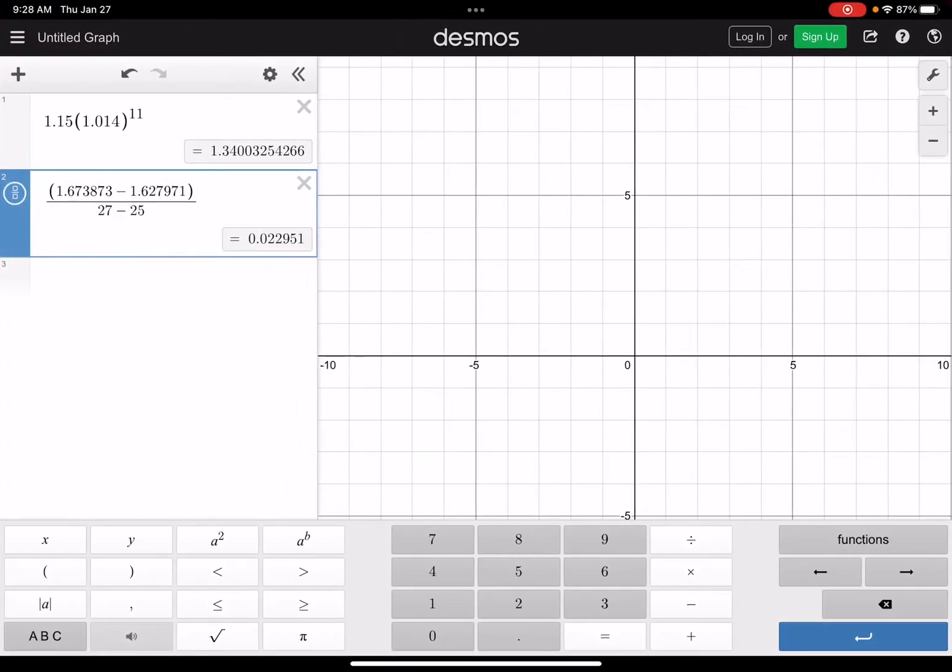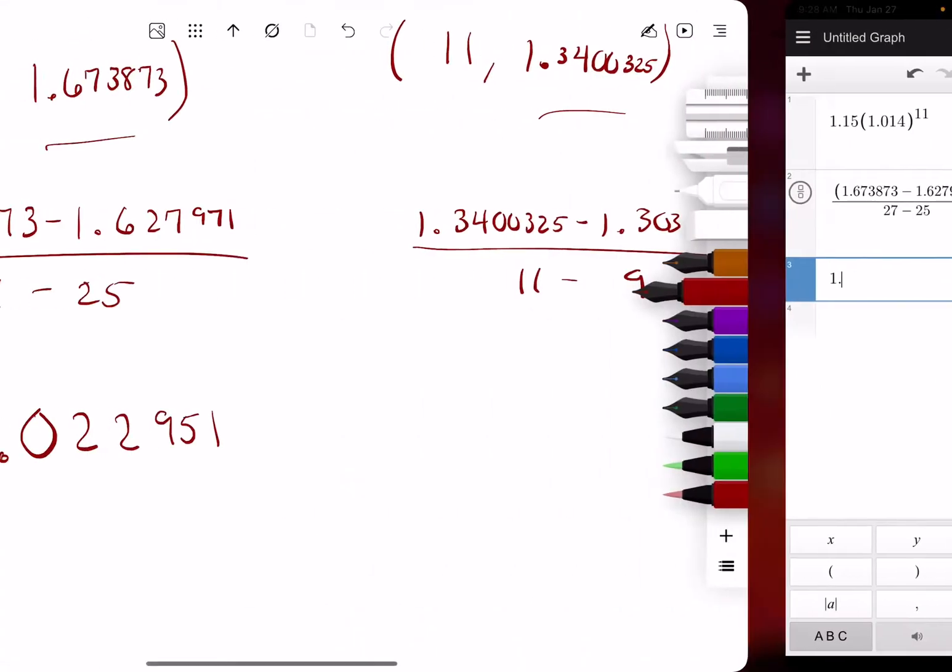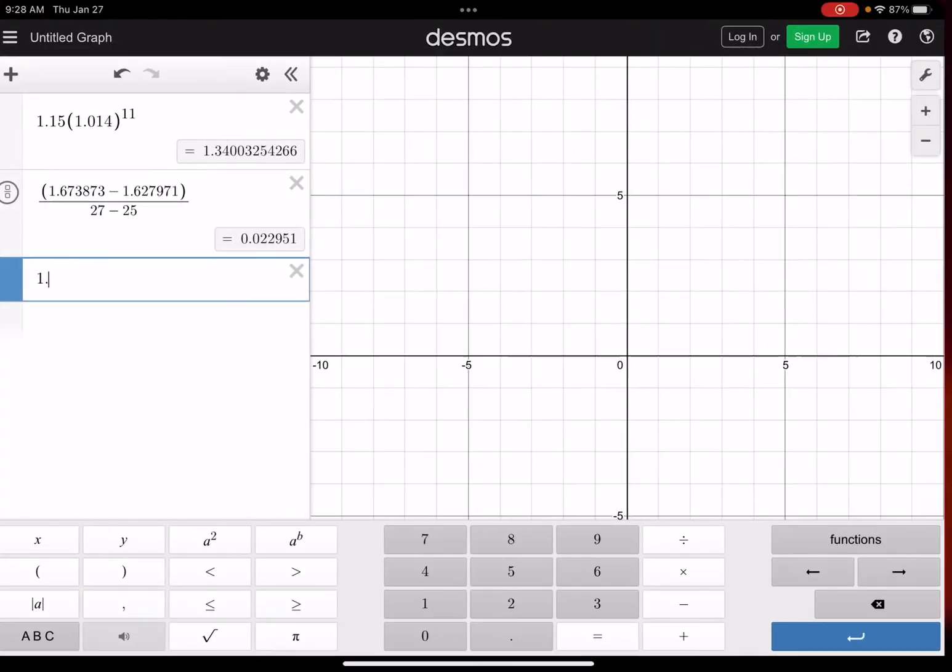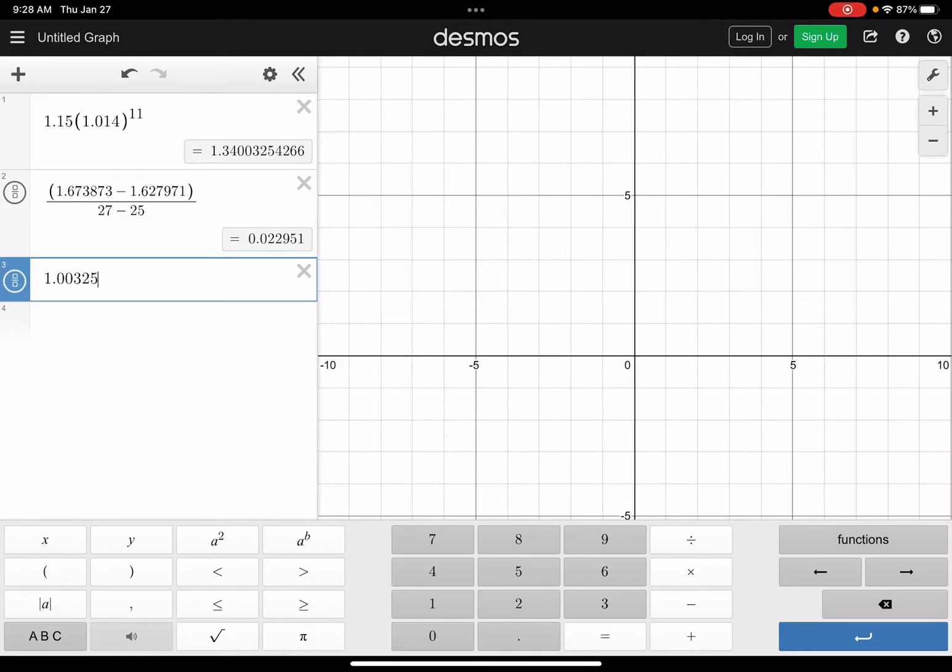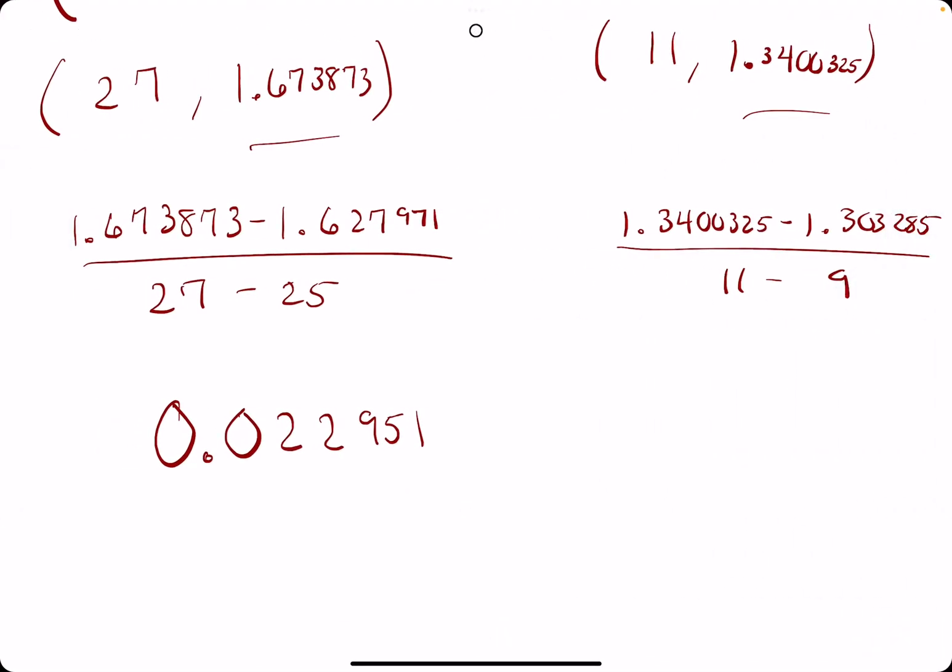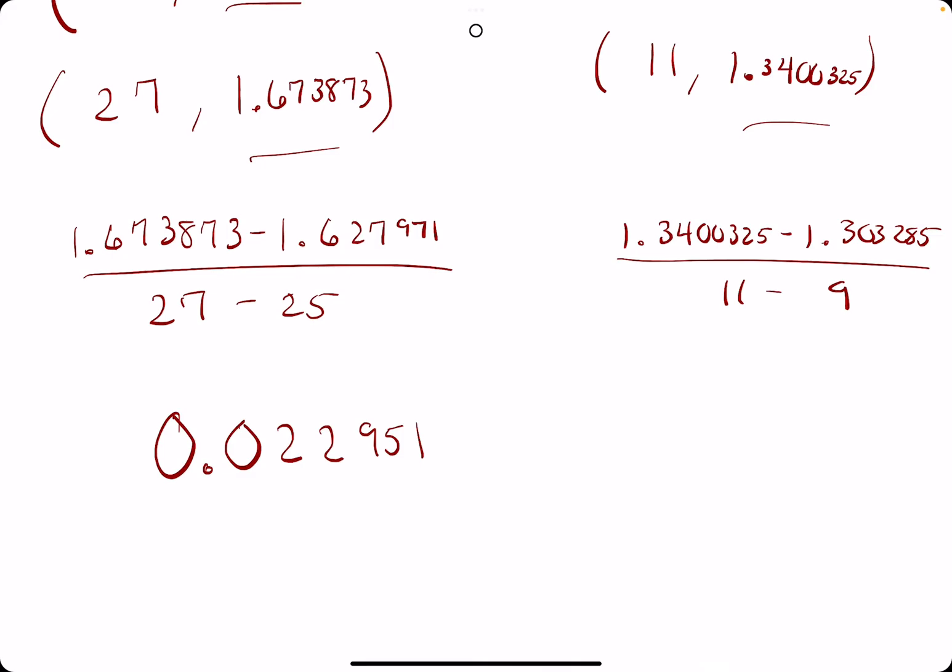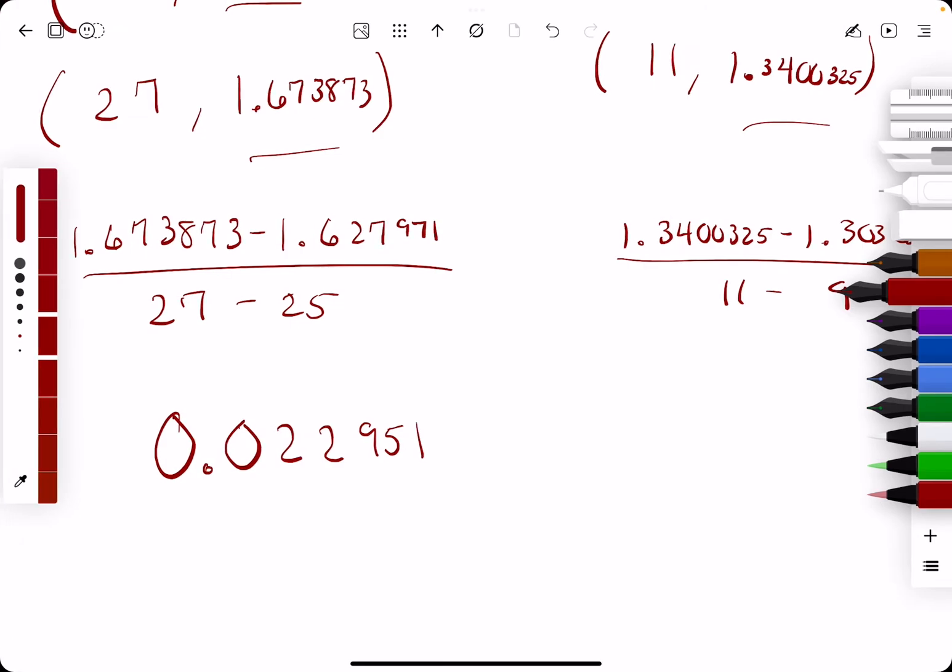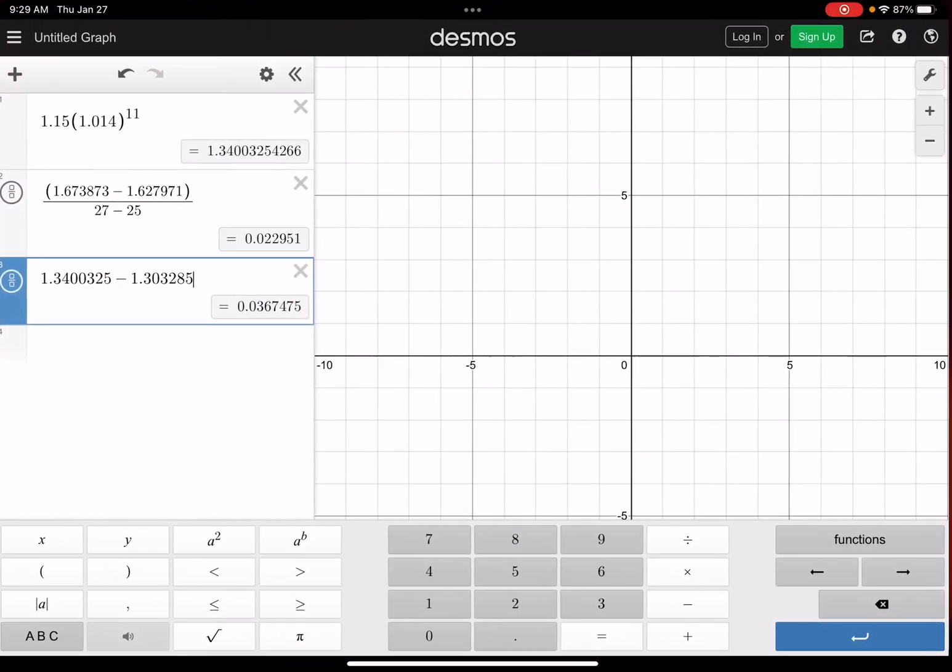All right, so we'll do the next one now. 1.3400325 and then we have 1.303285. And then we're dividing by 11 minus 9, and that will give us 0.01837.